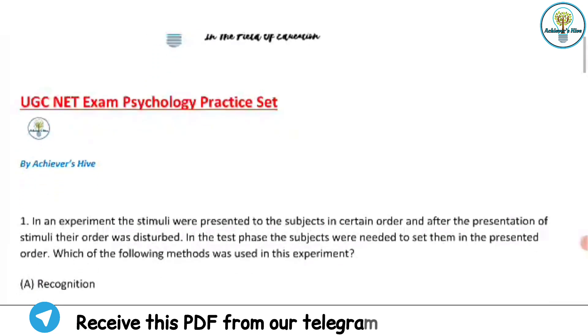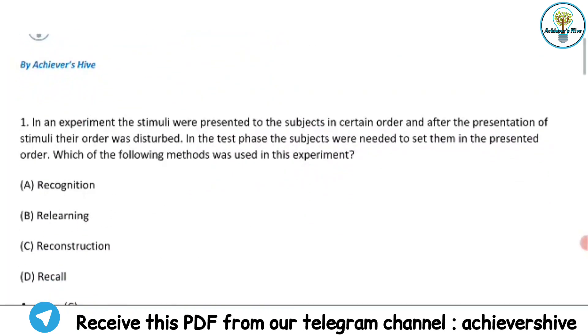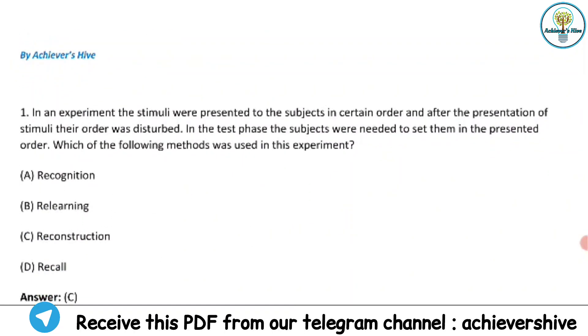So let's begin with question number one which is right in front of you. In an experiment the stimuli were presented to the subjects in certain order and after the presentation of stimuli their order was disturbed. In the test phase the subjects were needed to set them in the presented order. Which of the following methods was used in the experiment?